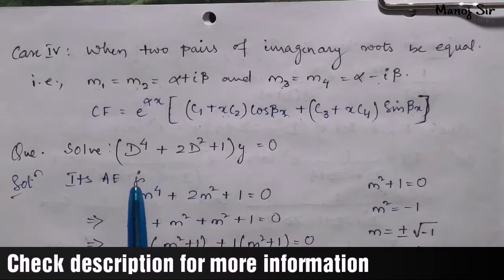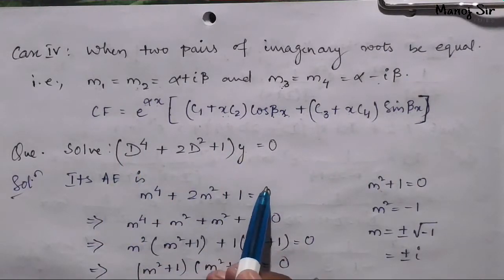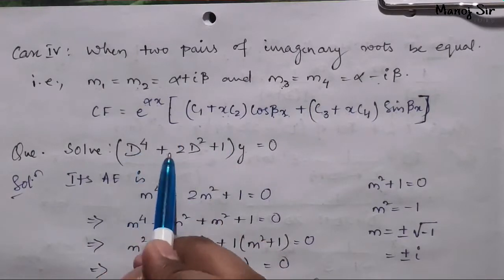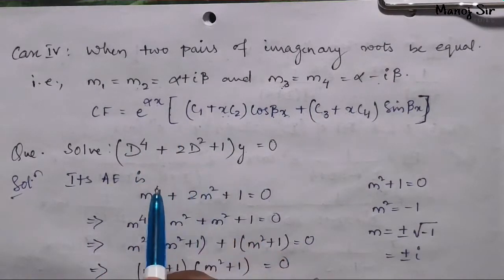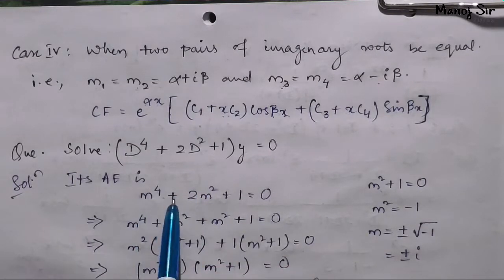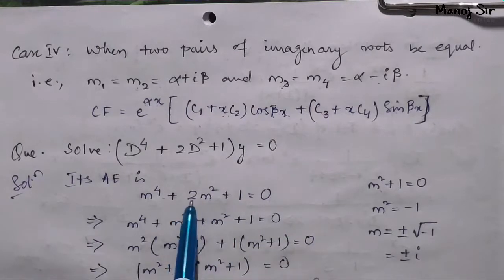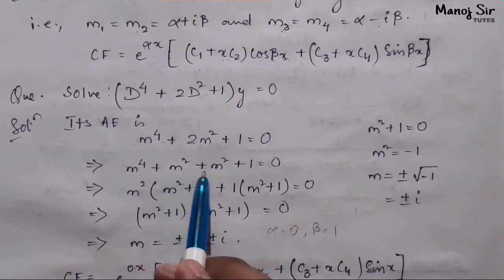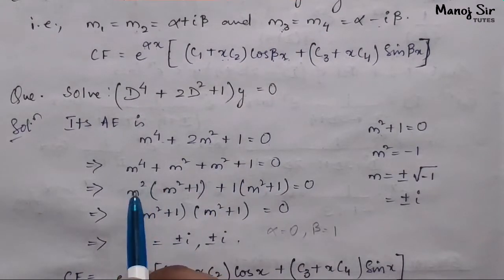The auxiliary equation (AE) is found by replacing D with m and equating to zero. So replacing D with m: m⁴ + 2m² + 1 = 0.